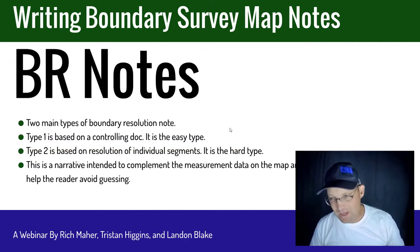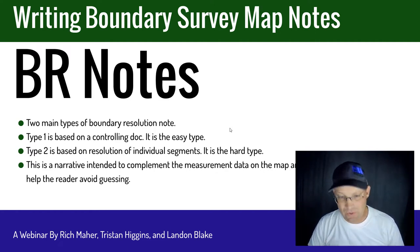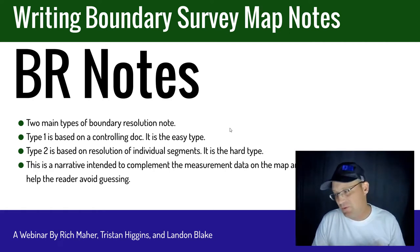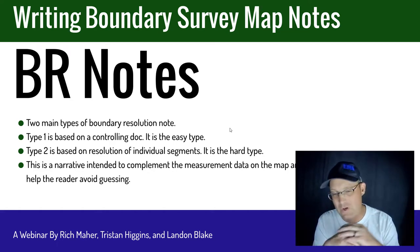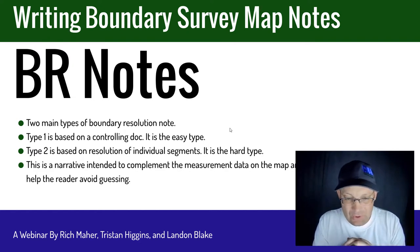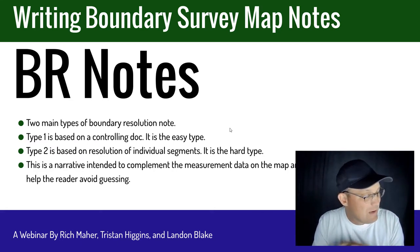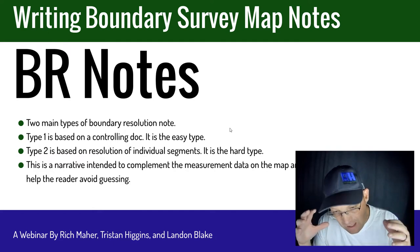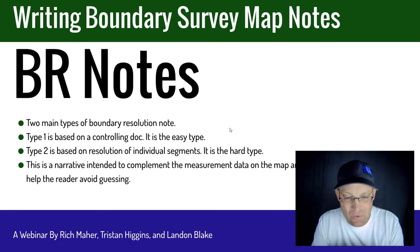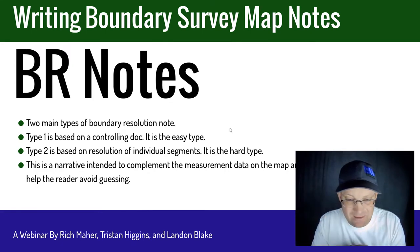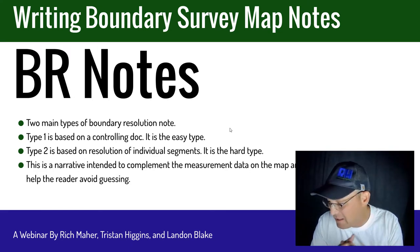The fourth type of note we wanted to talk about is boundary resolution notes. Of the four notes, these are probably the trickiest. I've kind of gone in order from easiest note to hardest note across these two videos. So when you're learning, start with the monument notes and the property corner notes, then work your way up to the adjoiner notes and the boundary resolution notes. Boundary resolution notes are basically a short narrative that explains how you resolved the boundary, and it supports or supplements the actual notations on the map itself. Most surveyors don't do that. We just go ahead and put a narrative on that explains exactly what we did.